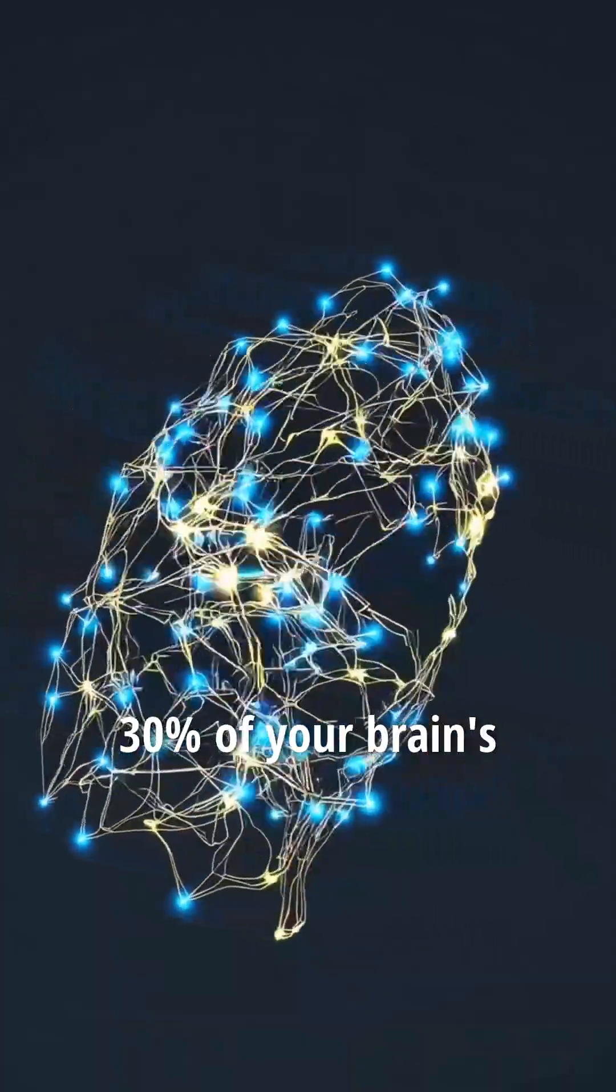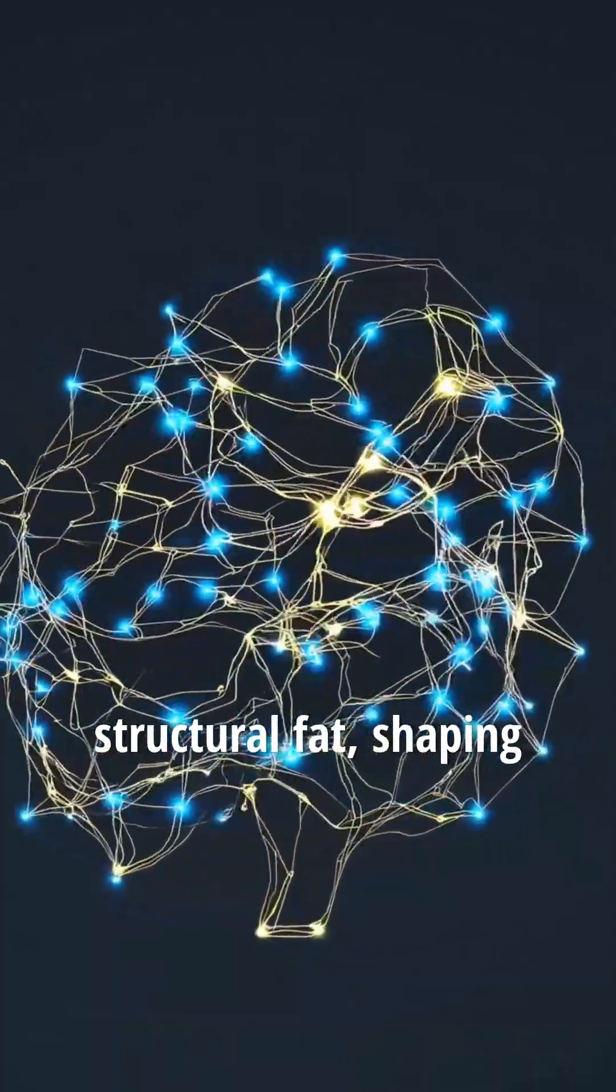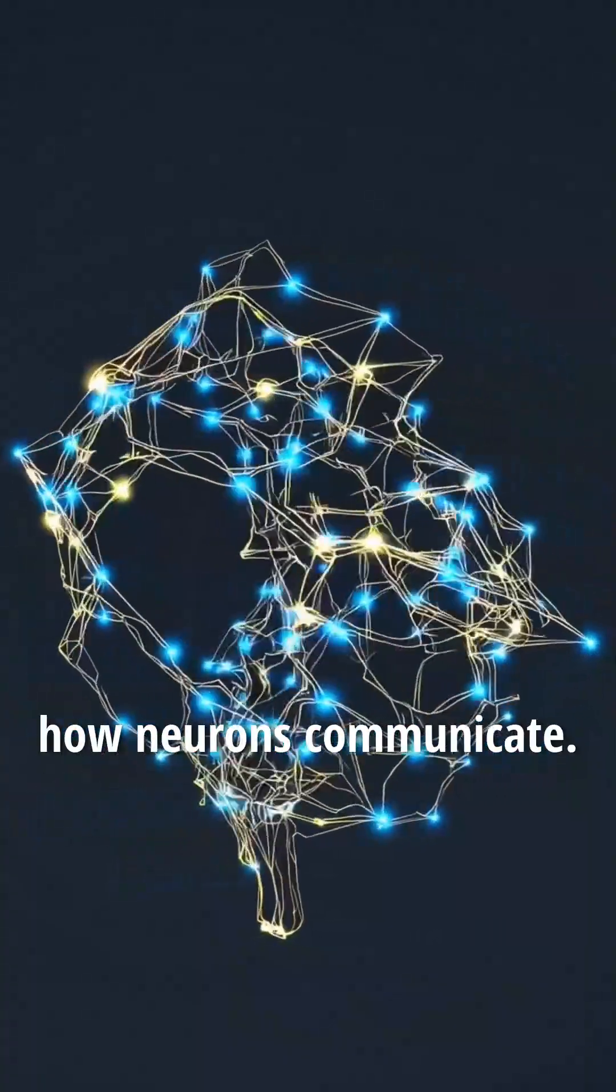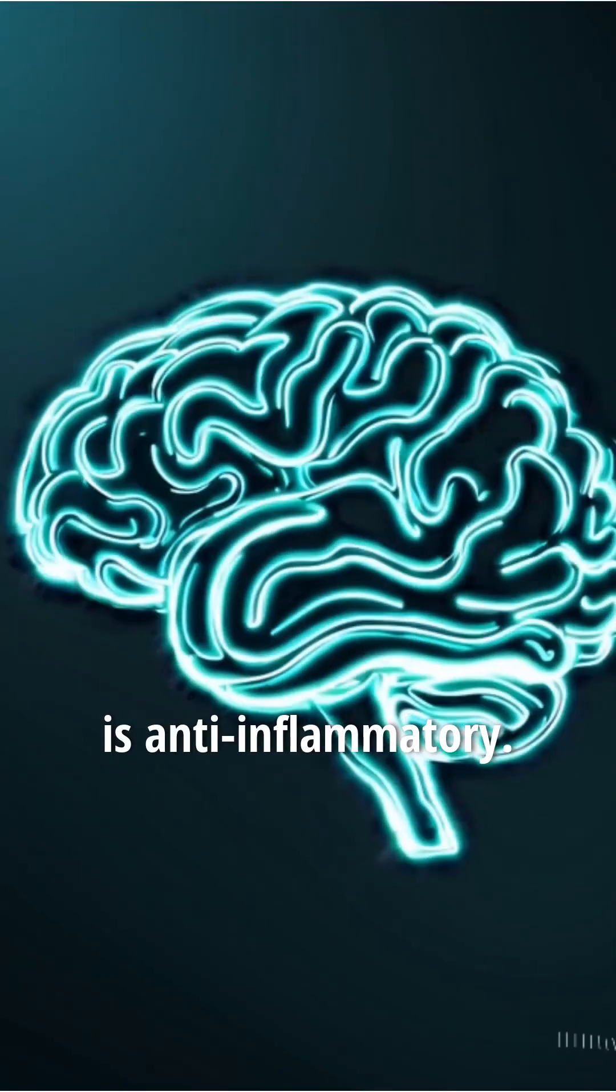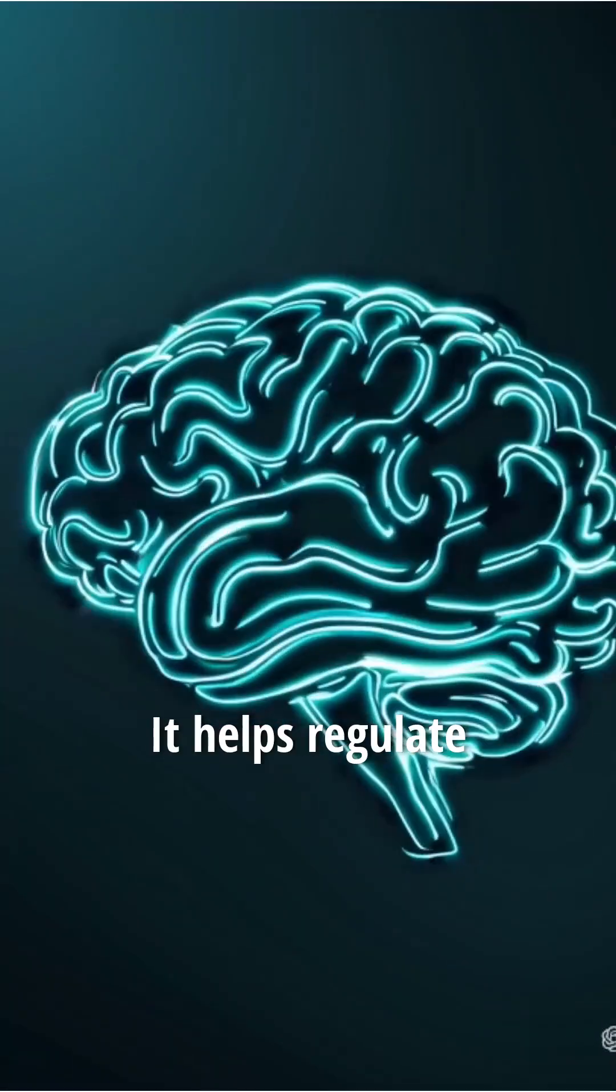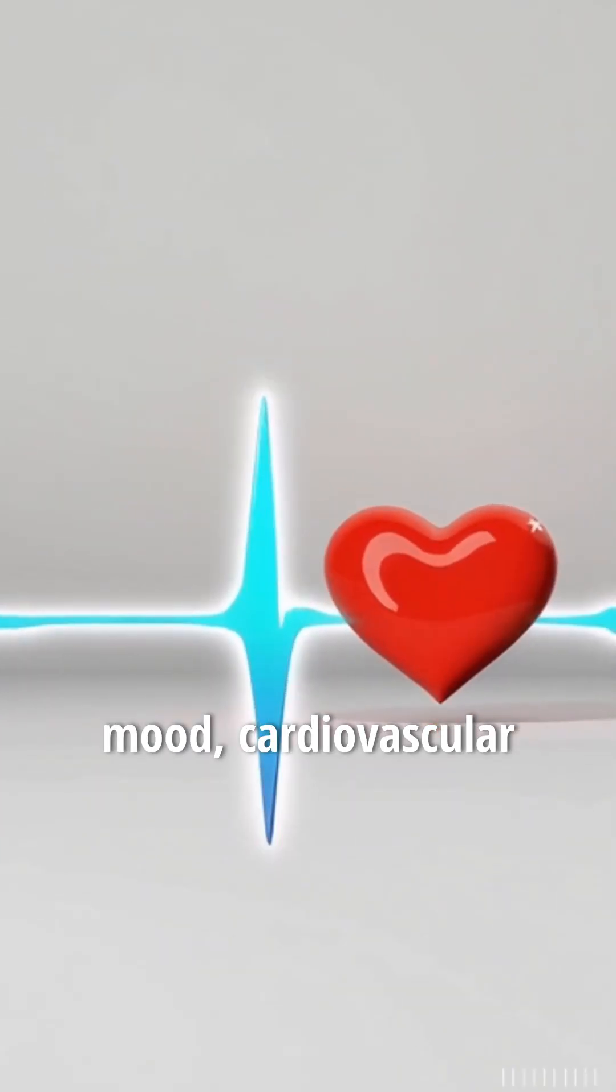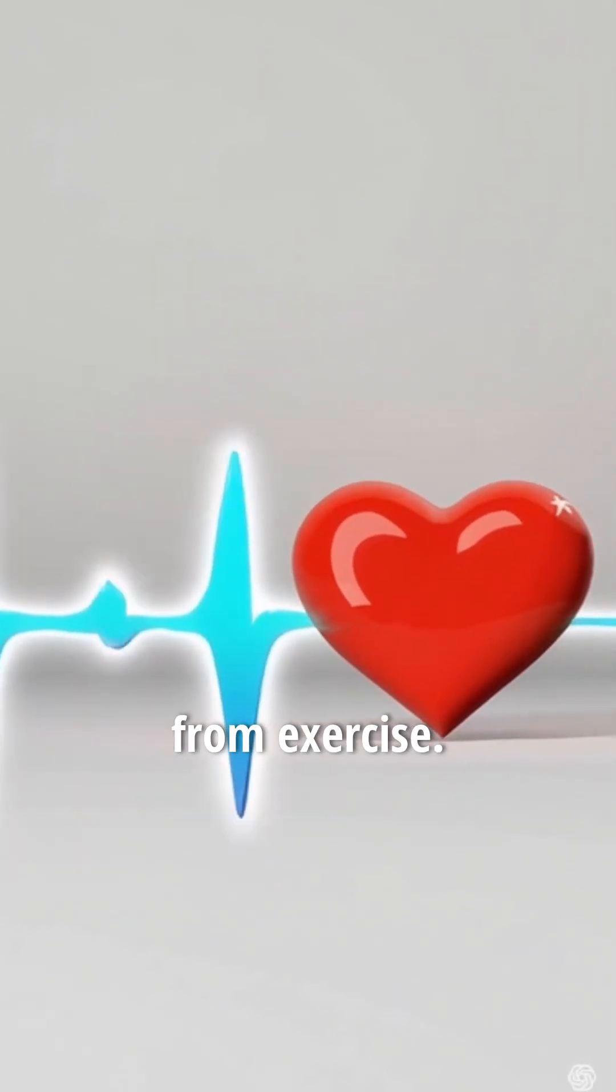DHA makes up nearly 30% of your brain's structural fat, shaping how neurons communicate. EPA, on the other hand, is anti-inflammatory. It helps regulate mood, cardiovascular health, and recovery from exercise.